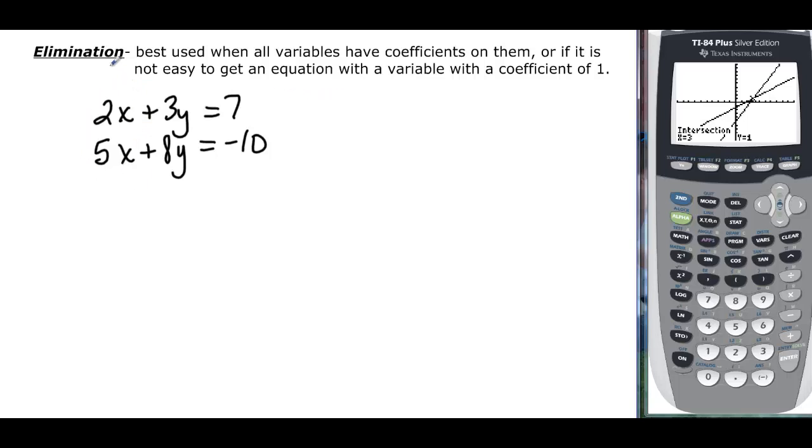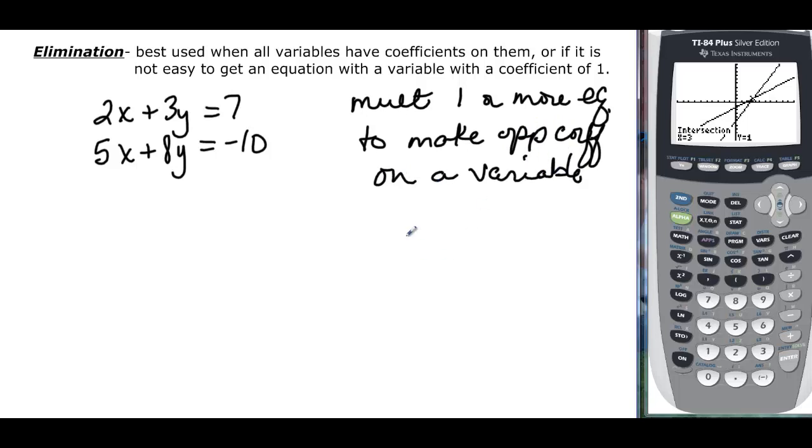What we want to do is multiply one or more equations to make opposite coefficients on a variable. That's the first step. The second step is to add the two equations, and this will eliminate one variable. Then you've got a one-variable equation—it's very much like substitution at that point.